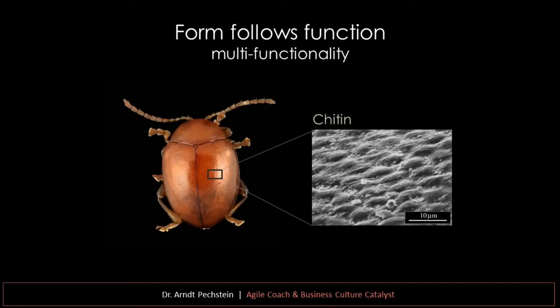Let me give an example of how biology and nature operate differently from how we create business. One principle that nature uses over and over again is what we call multi-functionality. You may have heard the term 'form follows function' — things are designed to work in a certain way, not the other way around. Nature cannot afford to have millions of different materials for various solutions, so it focuses its strategies on a smaller subset of elements, materials, and strategies.